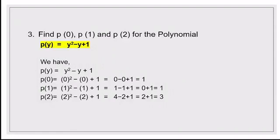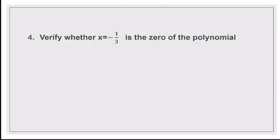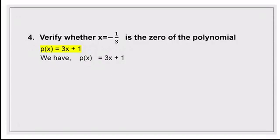So when you are asked to find a value like p(1), p(½), or p(5), and the polynomial is given, you remove the variable and put the value there — that means you are replacing the variable by the given value. The next question: verify whether x = -1/3 is the zero of the polynomial p(x) = 3x + 1. You have to replace x by -1/3, and if you get 0 after calculation, then the given value is the zero of the polynomial. If you don't get 0, it is not the zero.